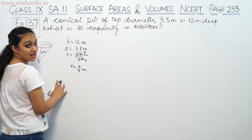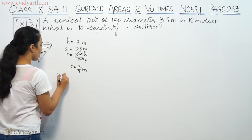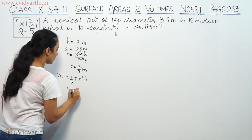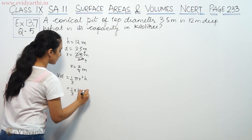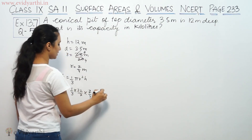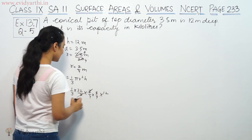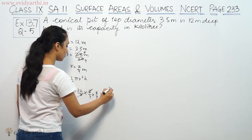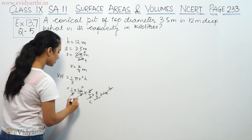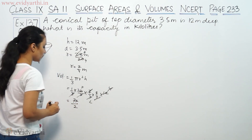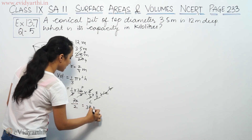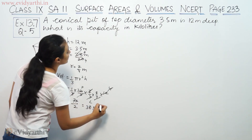So, we find the capacity in kilolitres. Volume is equal to 1/3 π r². So, volume = 1/3 into 22/7 into (7/4) into (7/4) into 12. The 7s cancel, and simplifying gives us 77 by 2, which equals 38.5 cubic meters. This is our volume.